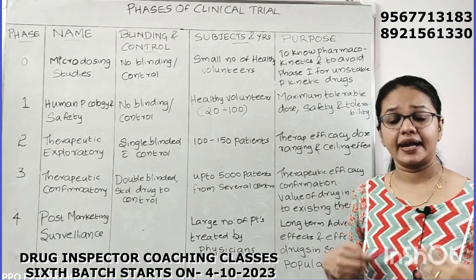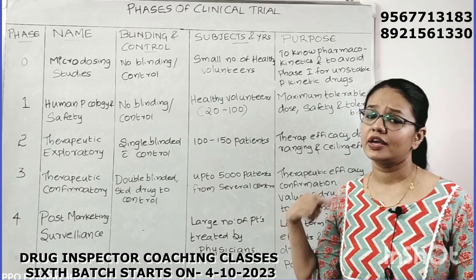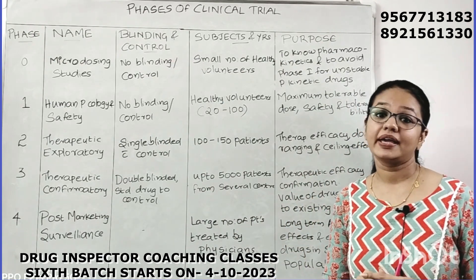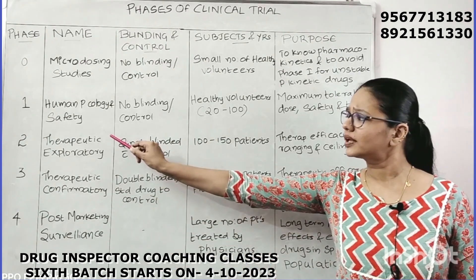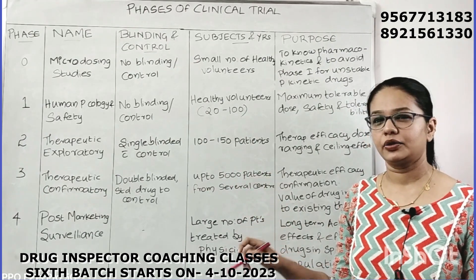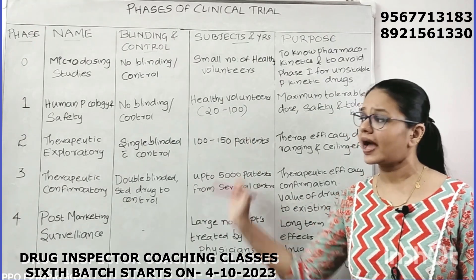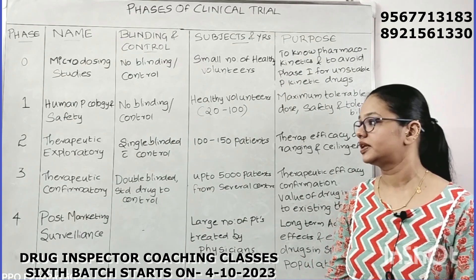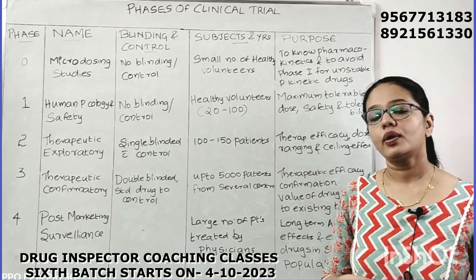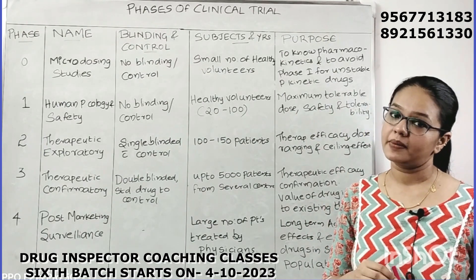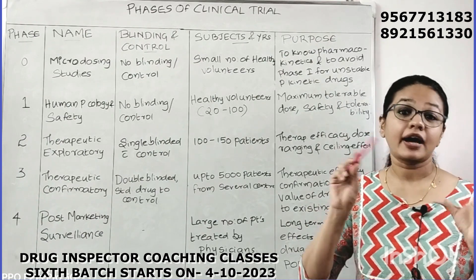In Phase 1, we carry out single doses, single ascending doses, and multiple ascending doses. Once Phase 1 is successfully completed, we go to Phase 2 — the therapeutic exploratory phase — where we explore or establish therapeutic efficacy. In Phase 2, we take 100 to 150 or 100 to 300 patients with targeted medical conditions, using a single-blinded study with a control or placebo. We find the safe dosing range, ceiling effect, and therapeutic efficacy.